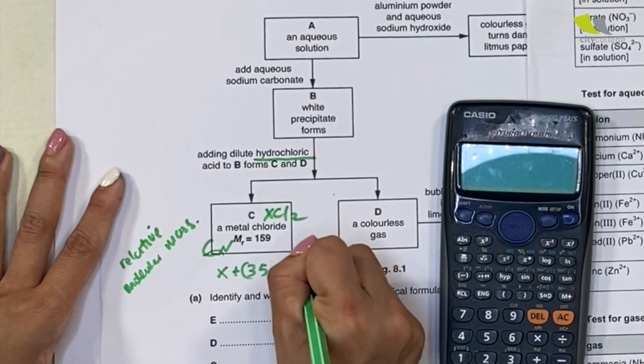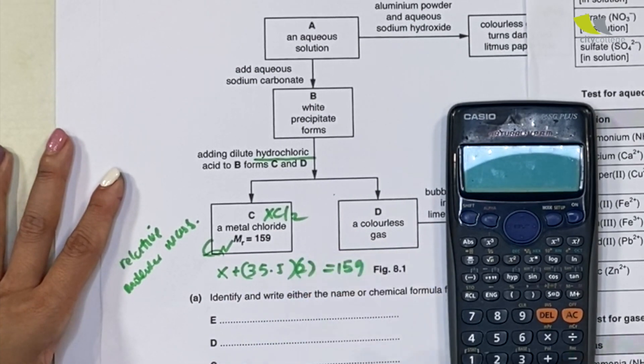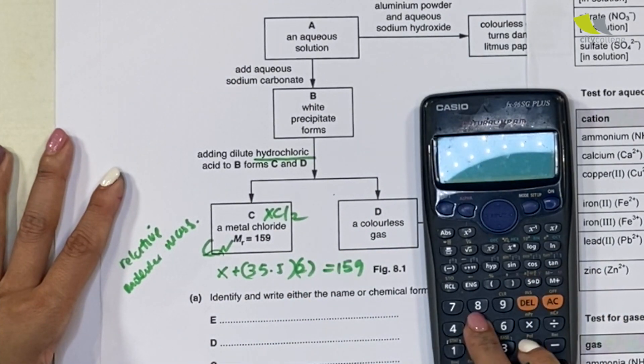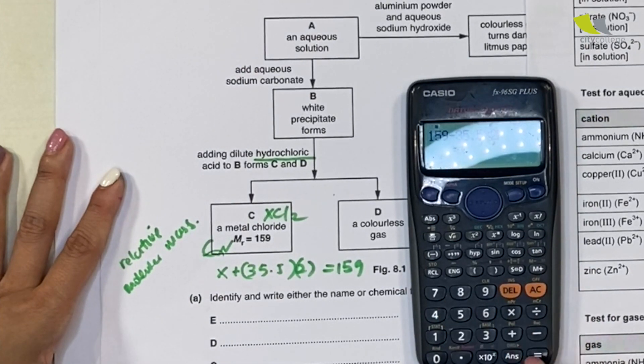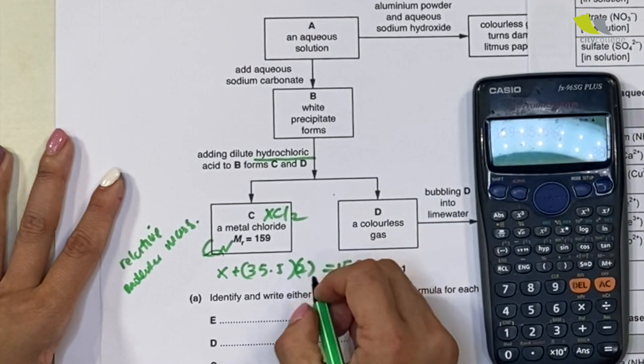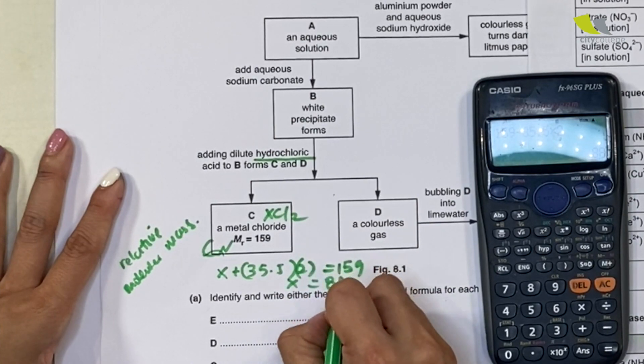So I will use 159 minus 35.5 times 2, that will give me 88. So X equals 88. Who is 88? Sr.